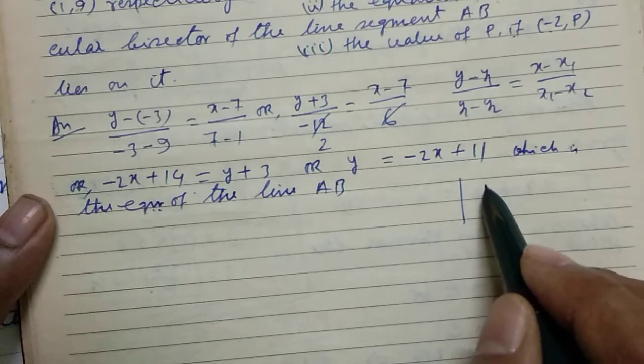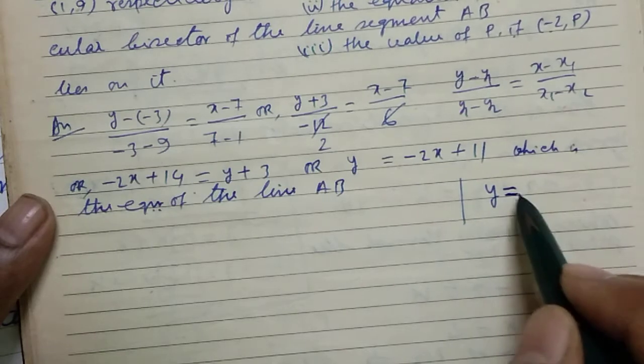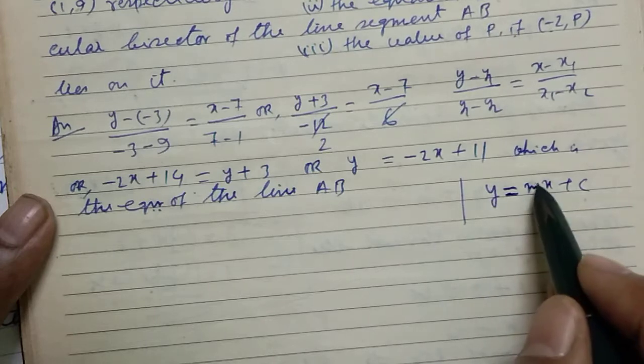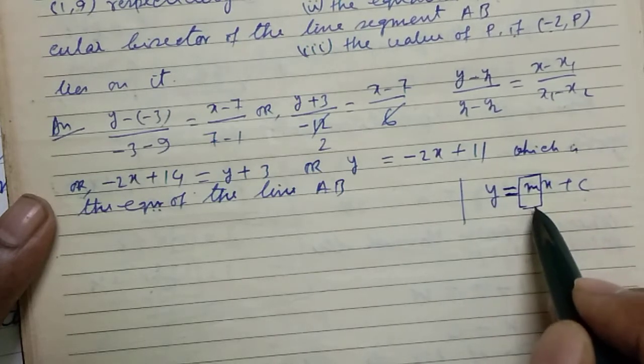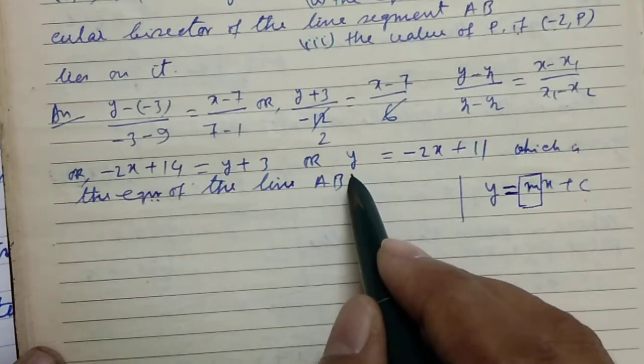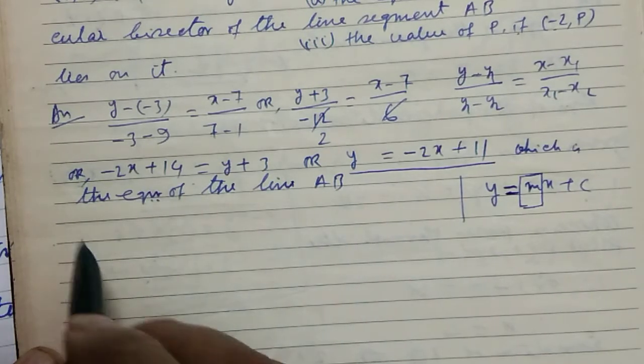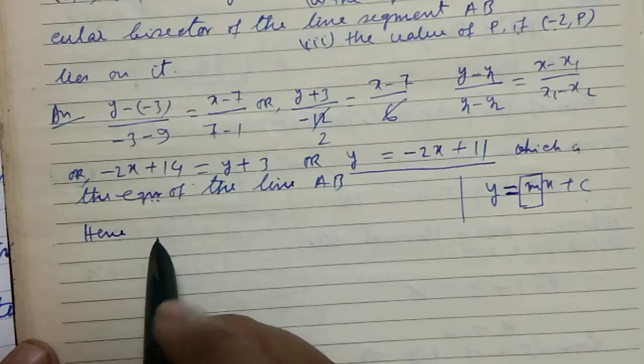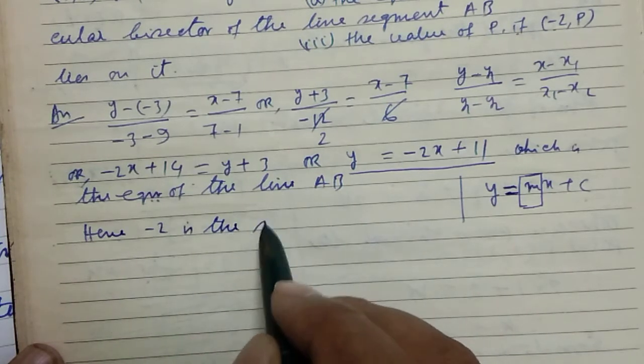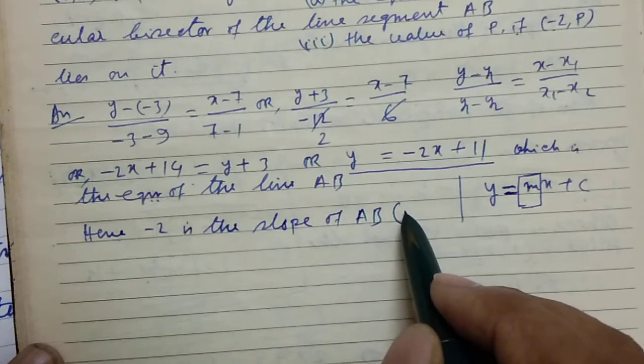We know that if we represent an equation in the form y equal to mx plus c, here m is the slope of the line. Here you note that the equation of AB is written in the formula y equal to mx plus c. Hence, -2 is the slope of AB. And this is the answer of 1.